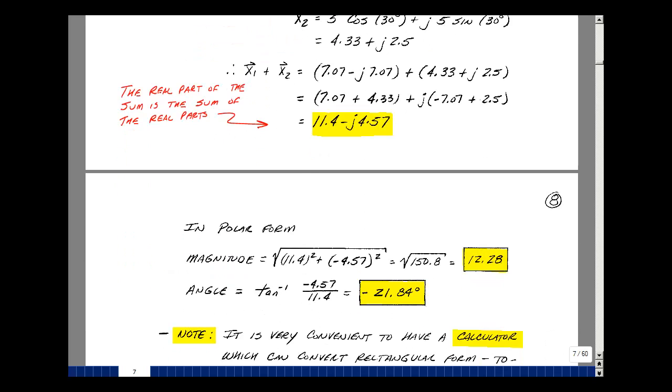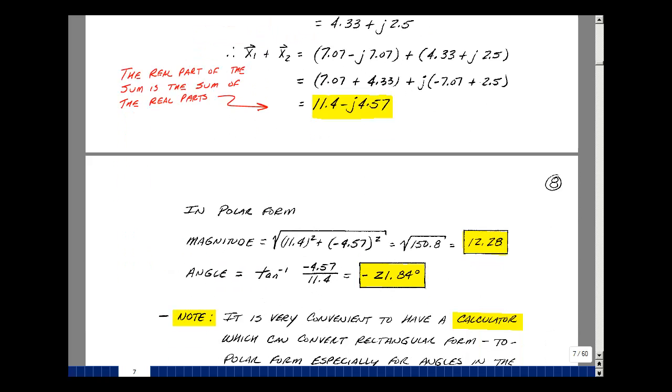So what I've got here is that the real part of the sum is the sum of the real parts. Right now, let's convert this to polar form to compare it to our last answer. I'll take the square root of the sum of the squares, so 11.4 squared and minus 4.57 squared, and adding those two squares together and square root, I get about 12.28. Pretty close to what I did with my ruler, but this is more precise.